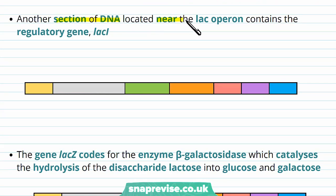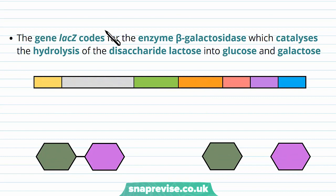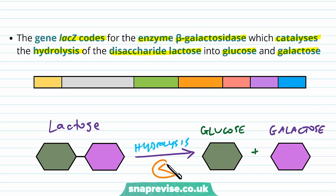There is one more section of DNA located near the lac operon but not exactly included in the operon — this contains the regulatory gene lac I. It's located away from the operon, but this is the regulatory gene. The lac Z gene codes for the enzyme known as beta-galactosidase, which catalyses the hydrolysis of the disaccharide lactose into glucose and galactose. So to break that bond it needs to carry out hydrolysis, and the enzyme which catalyses this is beta-galactosidase, encoded by lac Z.